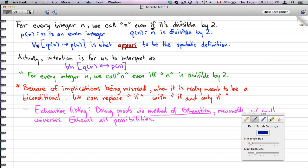That is what appears to be a symbolic definition, but actually, what we really intended to interpret this as is that, for every n, qn implies pn and pn implies qn. That is, if n is an even integer, then n is divisible by 2. If n is divisible by 2, then n is an even integer.